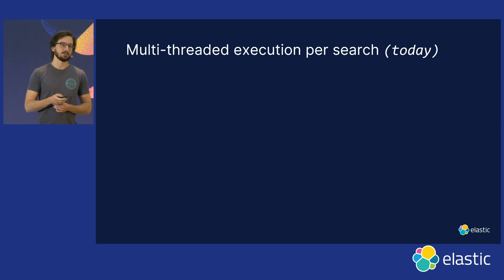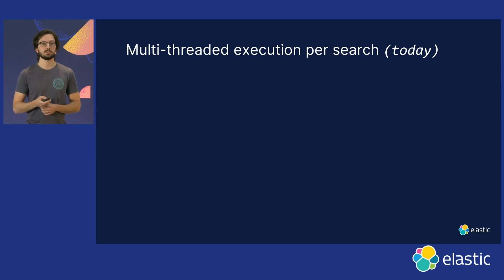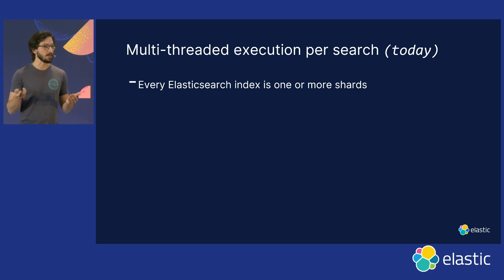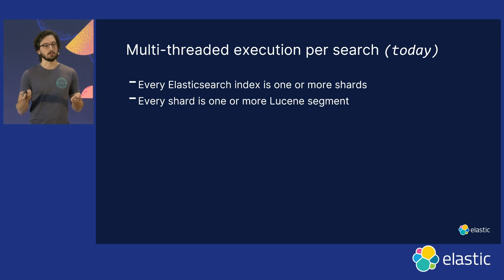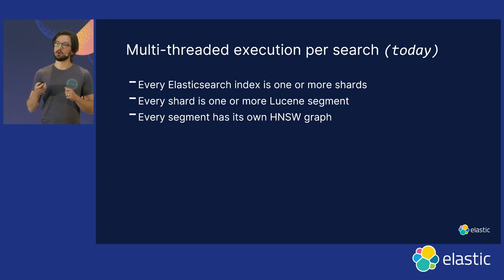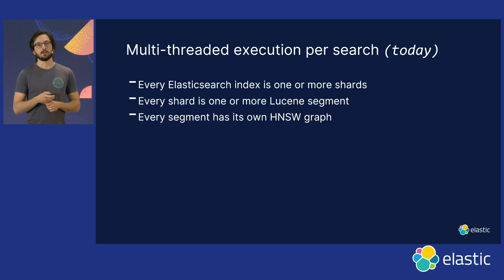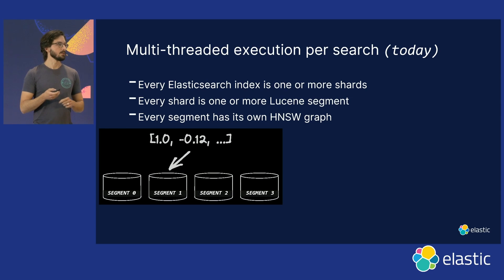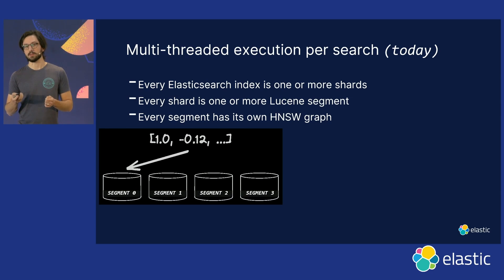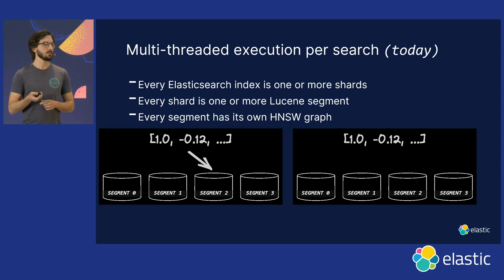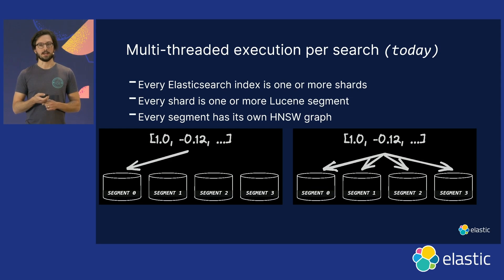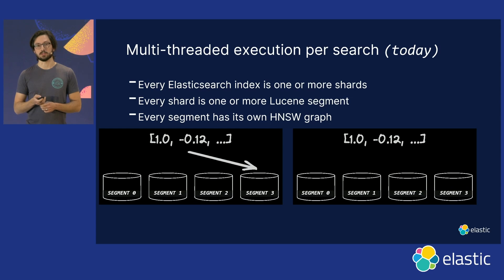Something else we have today is multi-threaded search over segments. Elasticsearch has always been composed of more than one shard per index — individual Lucene shards over multiple nodes — and we've always been able to search those in parallel. Every shard has more than one Lucene segment, and every segment has its own HNSW graph. Previously, we would read each individual segment one at a time, so runtime scaled linearly with the number of segments. We recently introduced the ability to run this in parallel, taking better advantage of available CPUs to massively reduce latency.